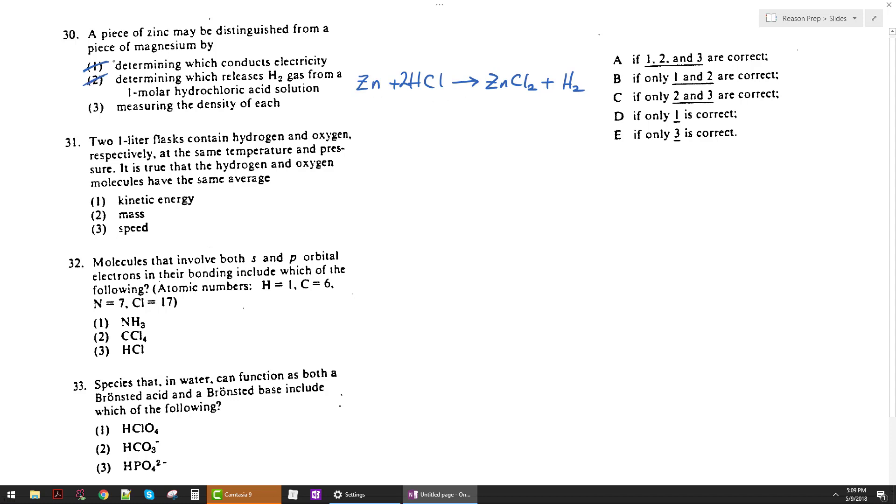But their densities will be different. Different metals, different densities, that is a basic fact about different metals, different substances in general. So if you measure their densities, you should be able to tell them apart. And so 3 works, and so the only choice would be E.